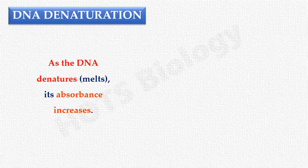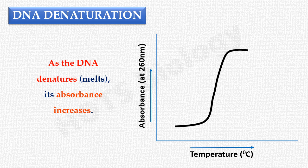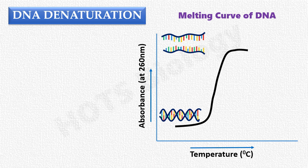Thus, the absorbance of a DNA solution is measured under a particular set of conditions. The lower portion of the melting curve represents that all the DNA molecules in the given solution are intact, that is, they are double-stranded. The upper portion of the melting curve represents that all the DNA molecules have completely denatured, or melted.